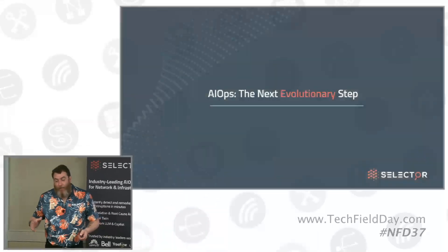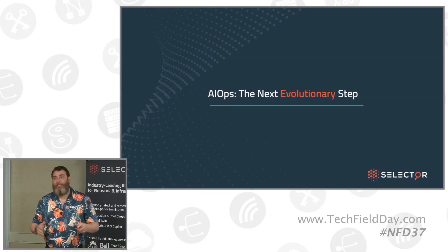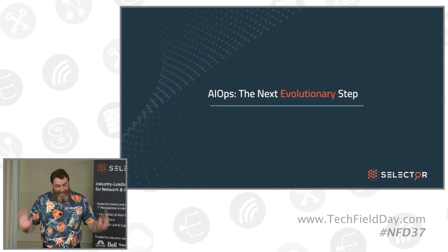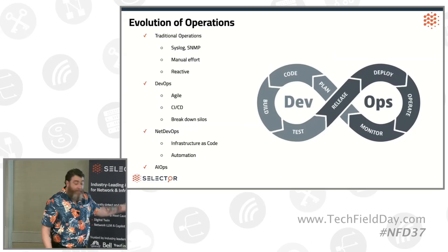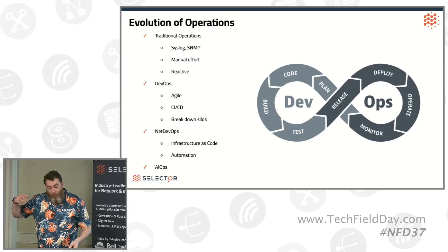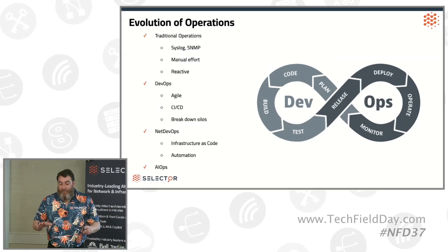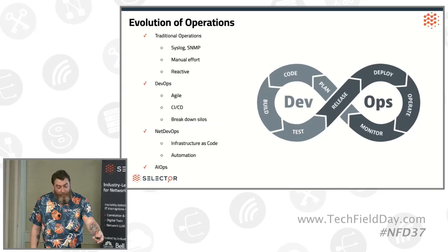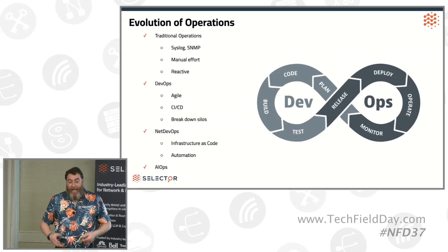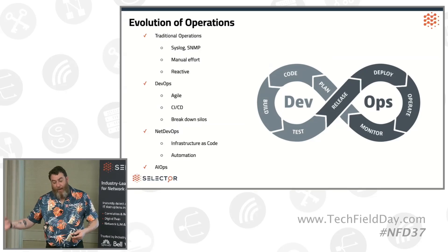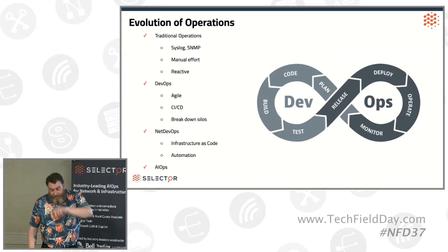How did we get to AIOps? AIOps is just the name we've landed on as AI operations — an evolutionary step. Traditional operations: some people are still doing things traditionally. Not everyone is at automation, not everyone is at AI. Syslog, SNMP, manual effort, reactive. DevOps comes around 2000-2001 with Agile, building off of lean practices from manufacturing. We get things like continuous integration and continuous delivery in the software space. Developers are starting to spin up their own infrastructure, breaking down silos in this continuous release, deploy, operate, monitor, plan, code, build, test cycle that just continues forever.